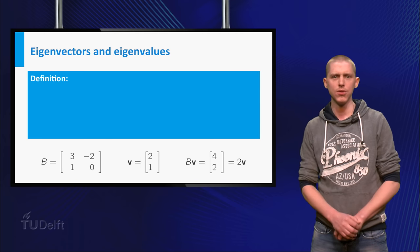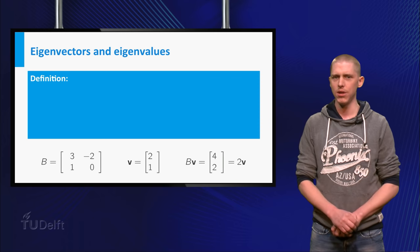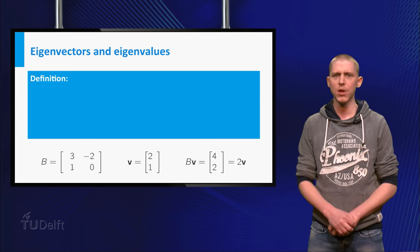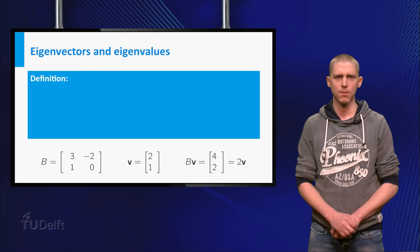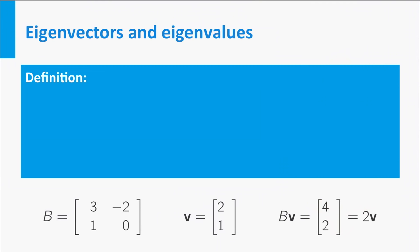The previous slide showed you that the vector V is a special vector for the matrix B, and the scalar 2 is a special scalar for this matrix. For any other square matrix, there can also exist such special vectors and special scalars, which we call eigenvectors and eigenvalues.